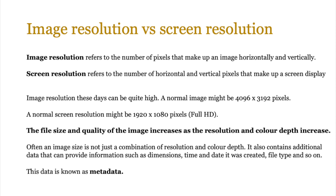Image resolution refers to the number of pixels making up an image horizontally and vertically, while screen resolution refers to the number of horizontal and vertical pixels making up a screen display — essentially the same concept, but image resolution applies to an image and screen resolution applies to a display device. For example, 4096 x 3192 pixels is normally a 4K image, while a typical screen resolution might be 1920 x 1080 pixels, which is full HD. The file size and quality of the image increases as the resolution and color depth increase.